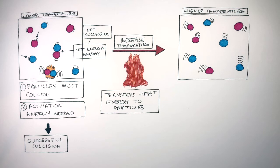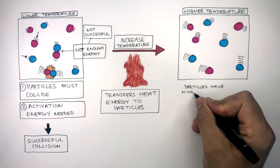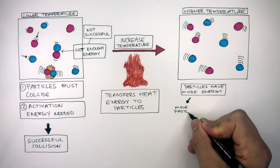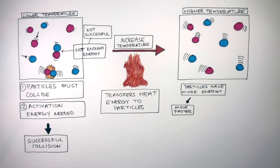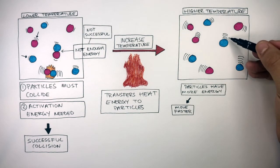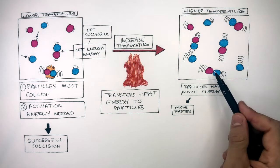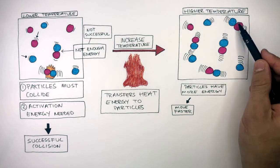So in the substance on the right, which has a higher temperature, the particles have more energy, so move faster. We can see from the diagram how the particles have more energy, shown by the vibration lines, causing them to move faster, so they collide more frequently.